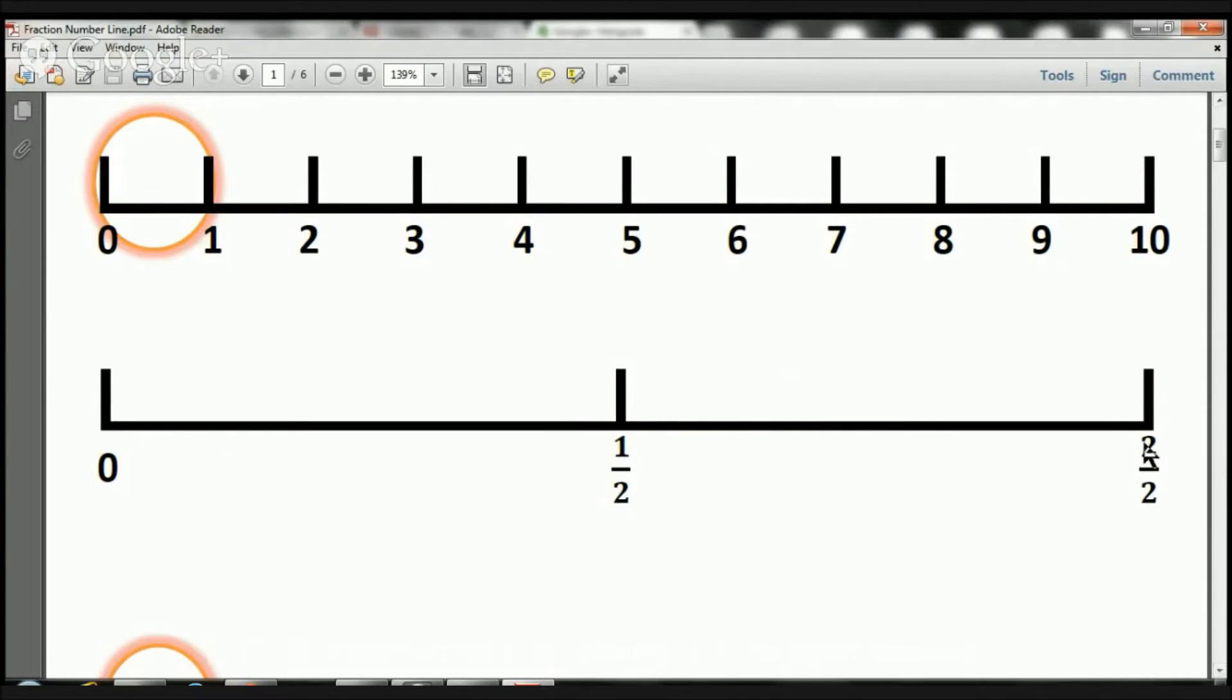And remember, anytime you have a two over two, or a three over three, or a four over four, or a five over five, or a hundred over a hundred, it's always going to equal one.